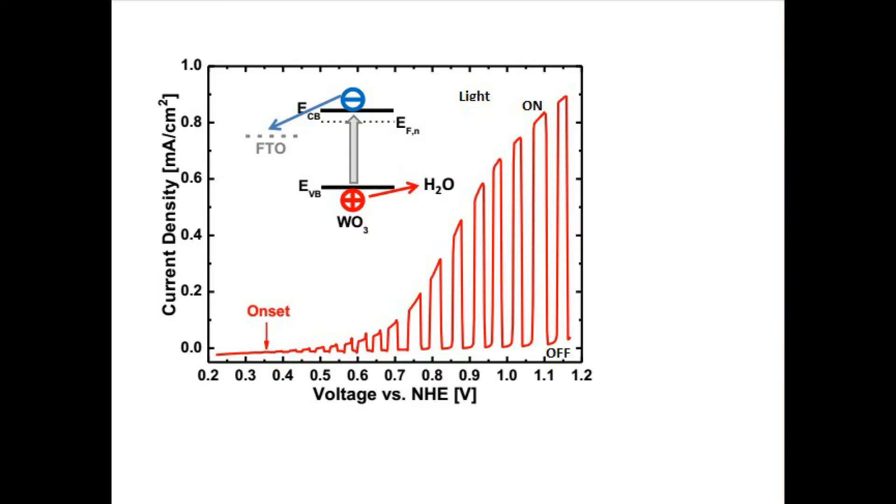Here we see a completed voltammogram for tungsten oxide with potentials versus the normal hydrogen electrode. It shows anodic photocurrents as high as 900 microamps per square centimeter that taper off as we scan from more oxidizing potentials on the right to more reducing ones on the left. At about 0.36 volts positive, the photocurrent becomes so small it can no longer be observed, and the potential value corresponding to that feature, labeled here as onset, gives us information about the energy of the material's Fermi level.